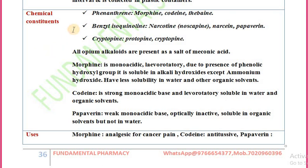The chemical constituents of opium are divided into three classes. The first class is the phenanthrene type of alkaloids, which have three phenyl rings. Examples of phenanthrene alkaloids are morphine, codeine, and thebaine.